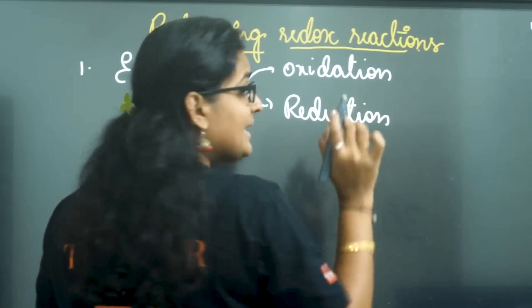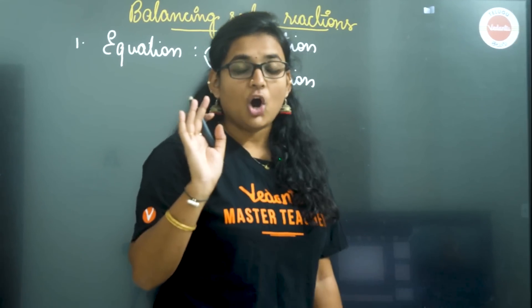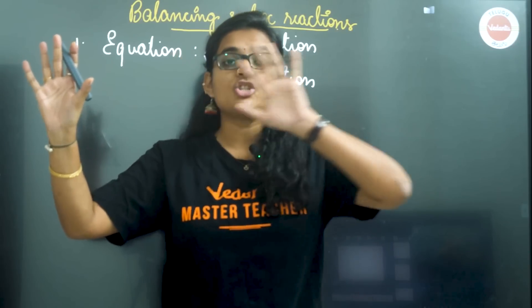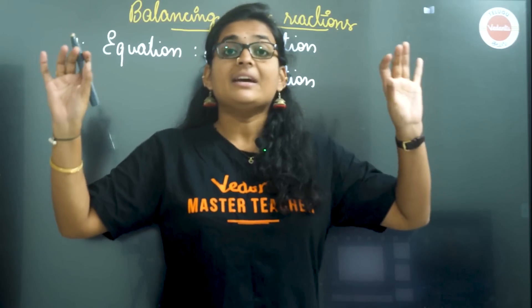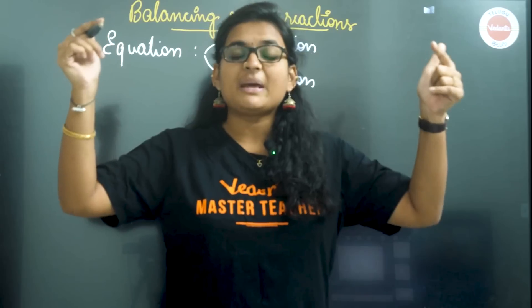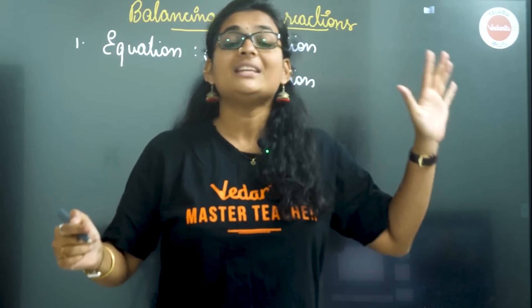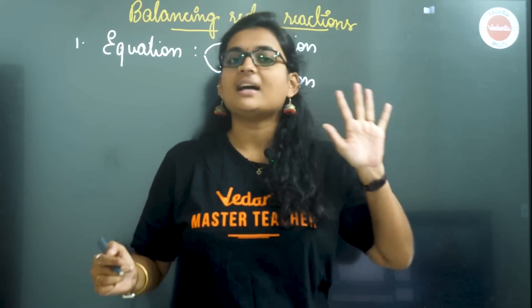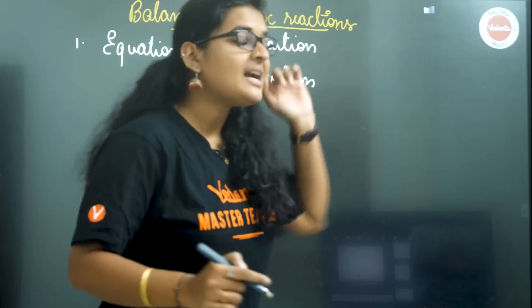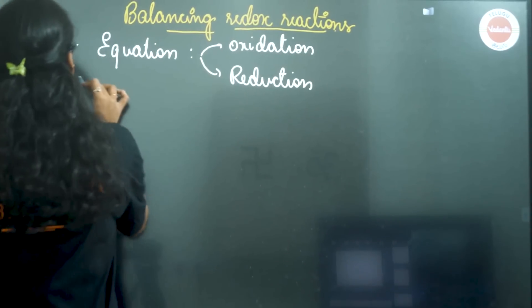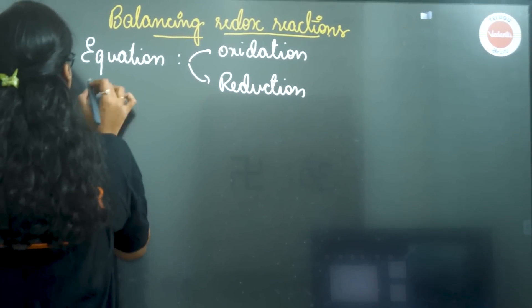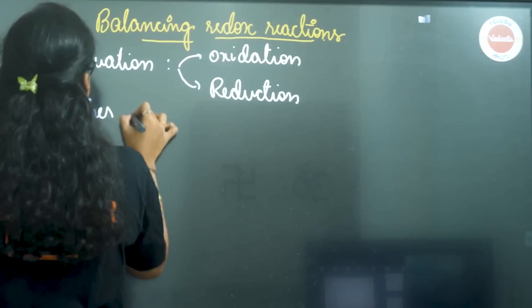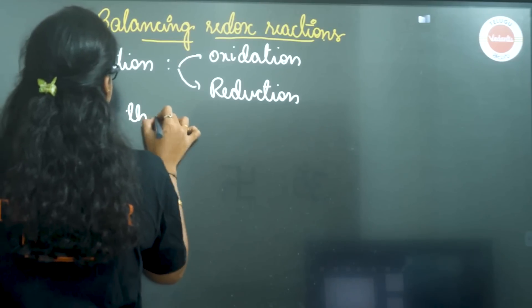We will calculate the oxidation number. On the left-hand side for reactants and products, the species whose oxidation number is increasing is going to be oxidation, and the species whose oxidation number is decreasing is going to be reduction. So we will identify the same. Second: balance atoms other than oxygen and hydrogen.